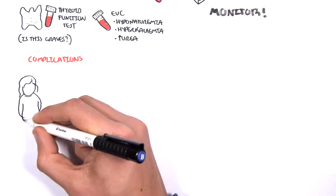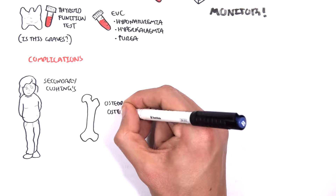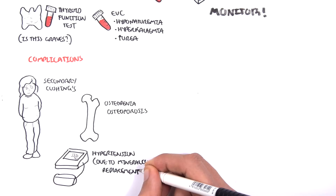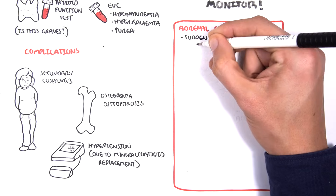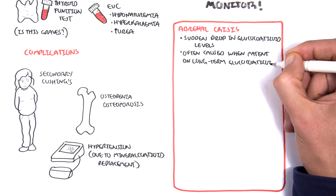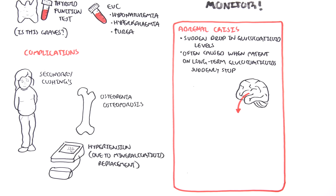Too much glucocorticoid replacement can cause secondary Cushing's. It can also cause osteopenia and osteoporosis, increasing the risk of bone fractures. Mineralocorticoid and glucocorticoid replacement can also cause secondary hypertension. The most serious complication is adrenal crisis, which is where there is a sudden drop in glucocorticoid levels. This is often caused when patients on long-term glucocorticoids suddenly stop taking the replacement or are not taking enough glucocorticoids.